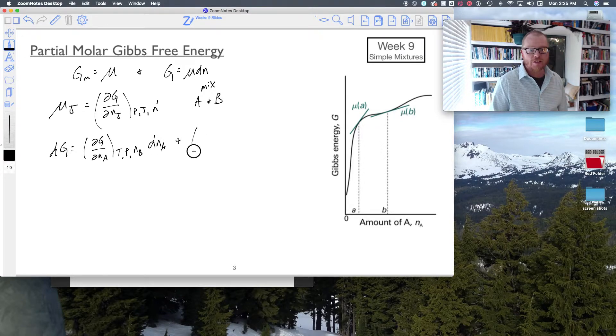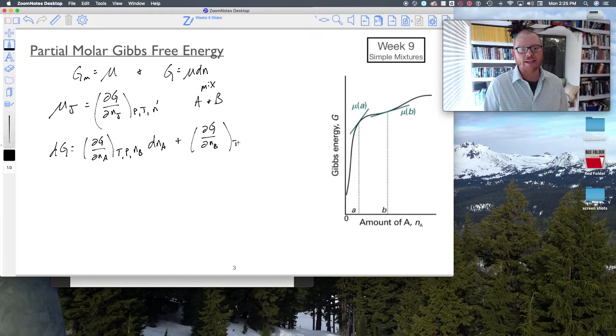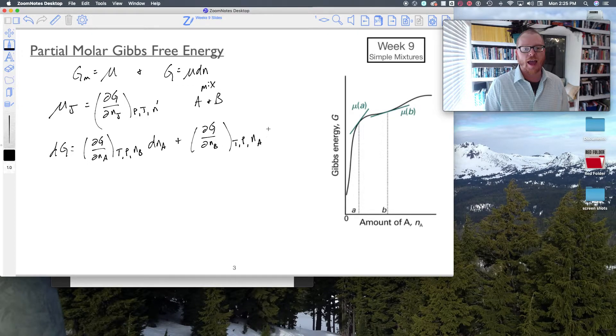And then now that's going to be partial of G by partial moles of B, so the chemical potential of B. And that's at constant T, constant P, and constant N_A, and this is of course going to be dN_B.